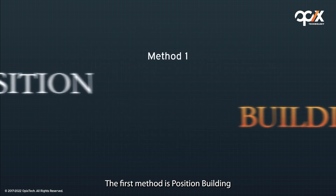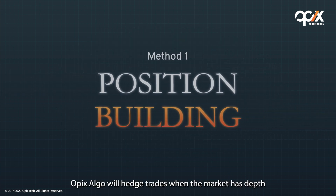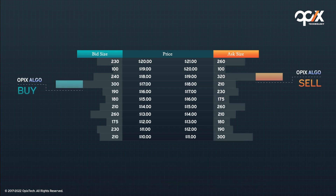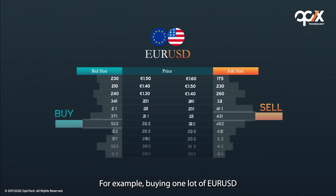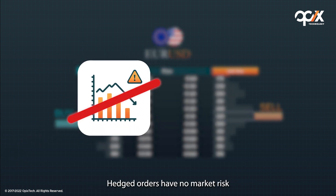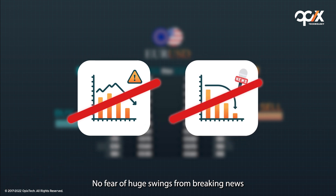The first method is position building. OPEX ALGO will hedge trades when the market has depth. For example, buying one lot of EURUSD and selling one lot of EURUSD at the same time. Hedged orders have no market risk — no fear of huge swings from breaking news.